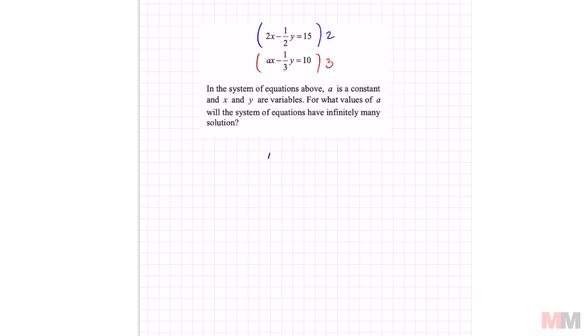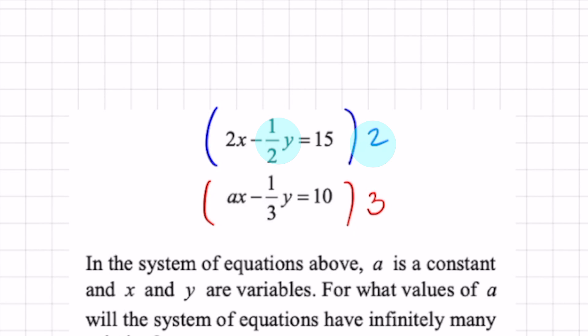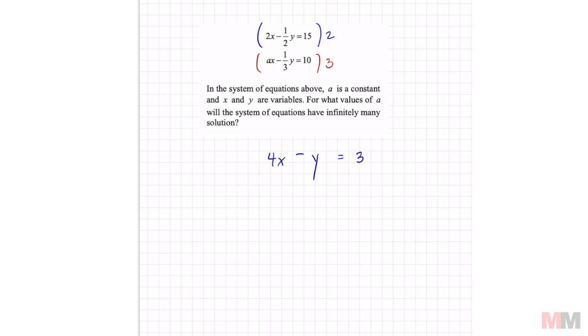Simplify that below and I end up getting 4x minus y, because 2 times negative 1 half is just negative y, equals 30. And the bottom equation, I'm going to get 3ax. Same reason, the 1 third is going to cancel, I'm left with negative y equals 30.